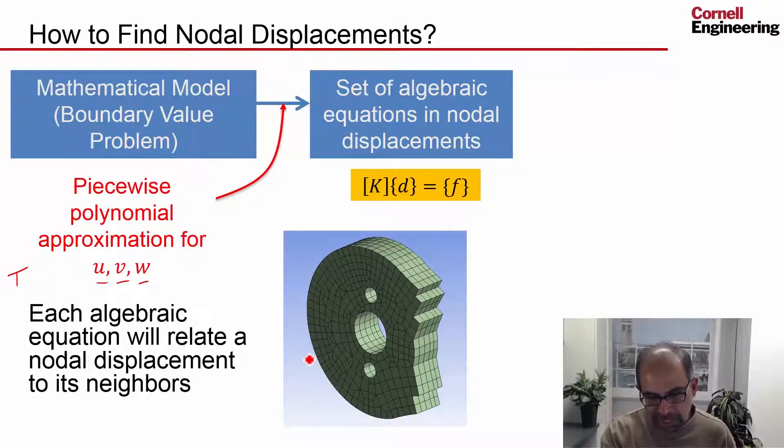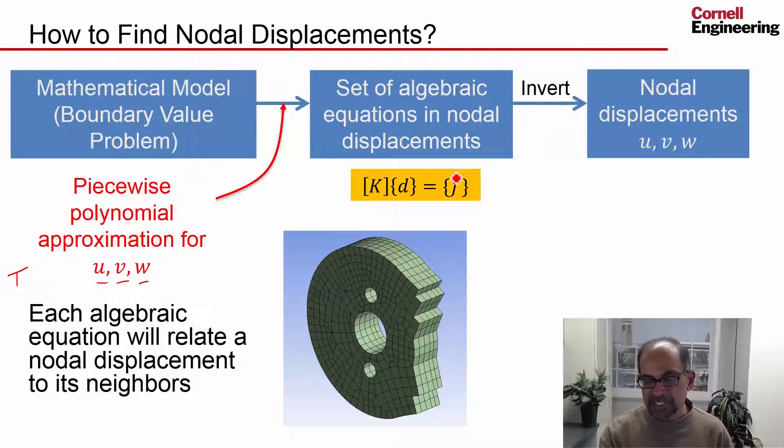You can write this in the stiffness matrix form and invert it. ANSYS will invert it for us and we'll get the nodal displacements. Recall that some of these are going to come from the essential boundary condition. For instance, for the nodes over here, you'll just set u v w equal to zero.